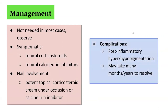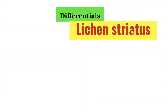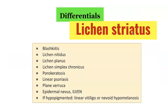Complications associated with lichen striatus include post-inflammatory hyper or hypopigmentation, which may take many months or years to resolve. In terms of the differential diagnoses of lichen striatus, this includes blaschitis, lichen nitidus, lichen planus, lichen simplex chronicus, linear porokeratosis, linear psoriasis, verruca plana, epidermal nevus, and other conditions.